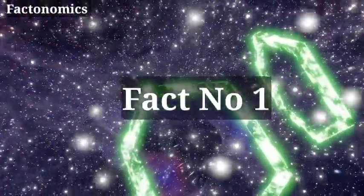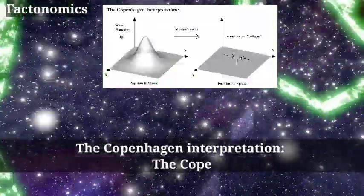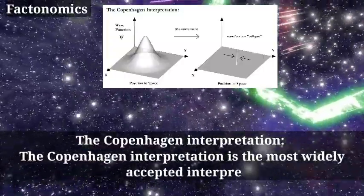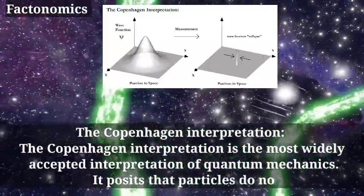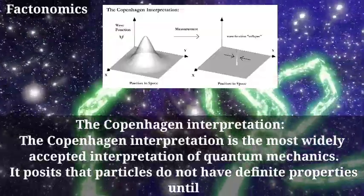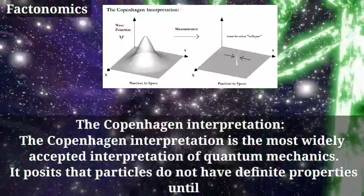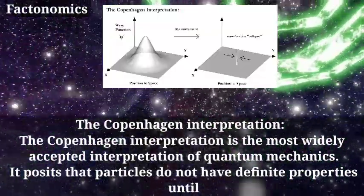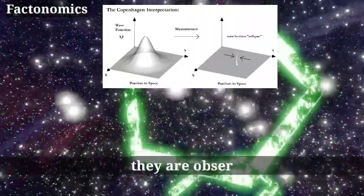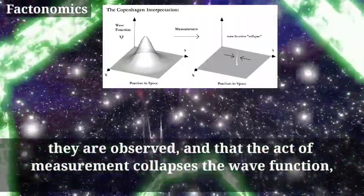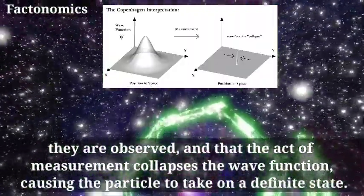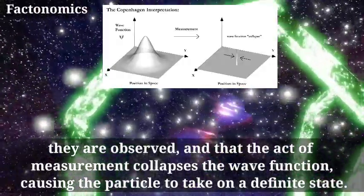Fact number 1. The Copenhagen Interpretation. The Copenhagen Interpretation is the most widely accepted interpretation of quantum mechanics. It posits that particles do not have definite properties until they are observed, and that the act of measurement collapses the wave function, causing the particle to take on a definite state.